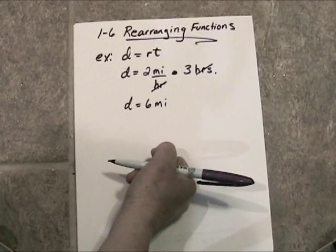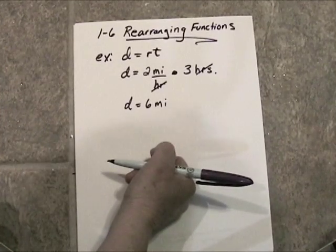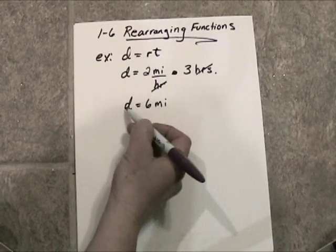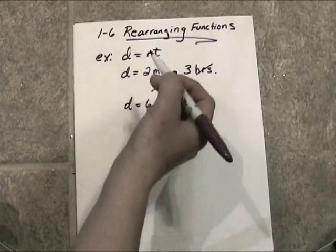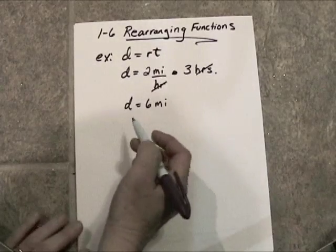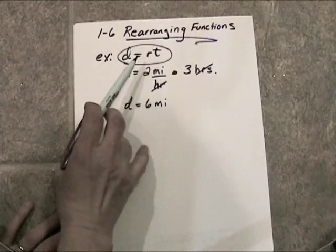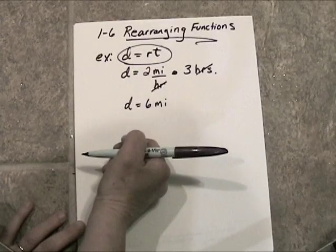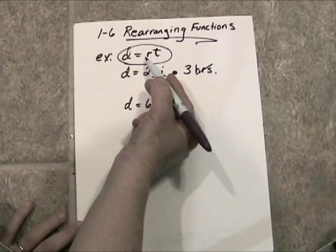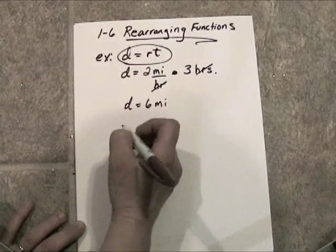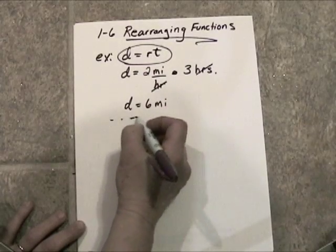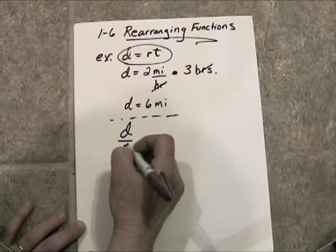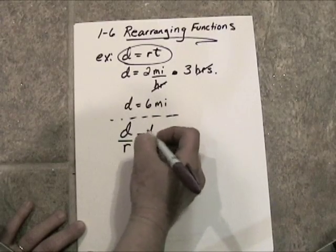Let's switch it up a bit. Let's say we wanted to know how long it would take her to go 10 miles. This time you know the distance and you want to find the time. So what we do here is we take the original formula and we rearrange it for time. To do that we would have to divide both sides by r. So we would see that the distance divided by the rate would be equal to the time.